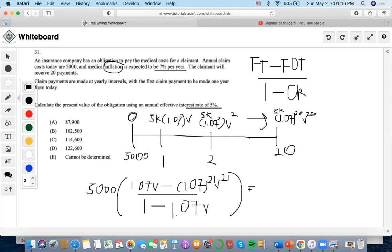Now, let's solve the present value. We know that the effective interest rate is 5%, so let's see. So 1.07 times v at 5%, this would be 1.019. Now, let's subtract that by 1.07 to the 21. Let's subtract that by 1.07.